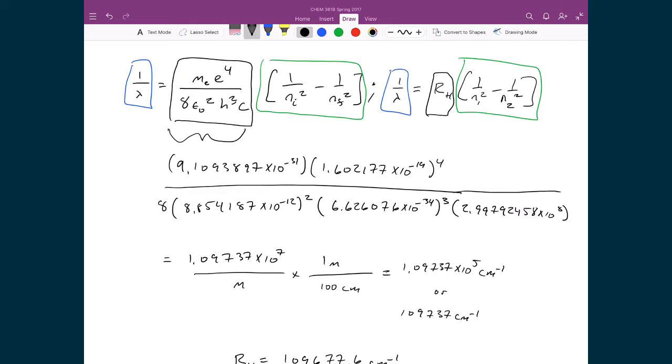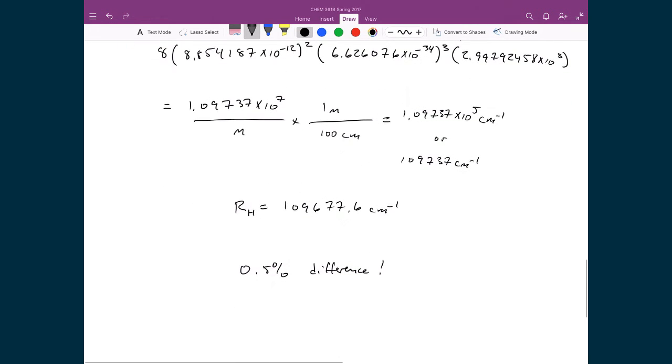And the only difference was that in this derivation that we just finished, we had a grouping of constants: the mass of the electron times the elementary charge raised to the power of 4, divided by 8 ε₀² h³ times c. And in the Rydberg formula, that was all encompassed in a constant called the Rydberg constant. And so we evaluated all of these constants together, and what we ended up with was a number that was only about 0.5% different from what Rydberg had measured.